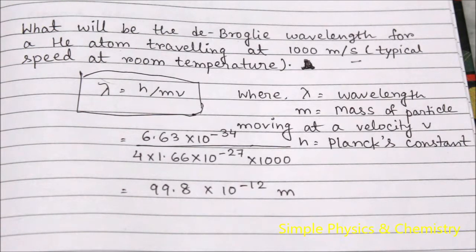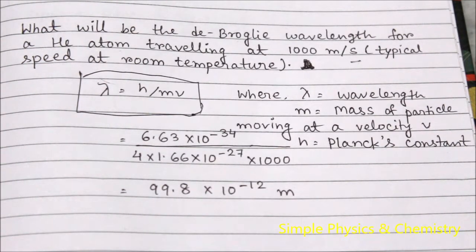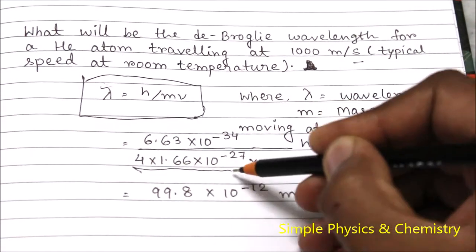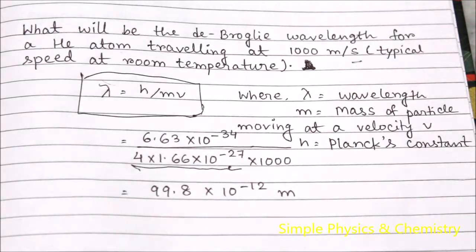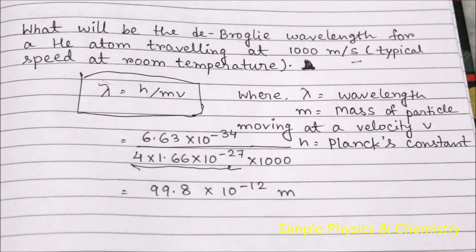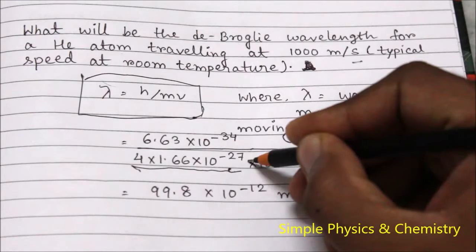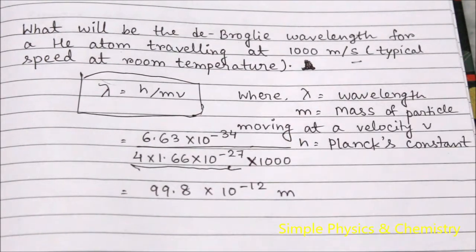We know that helium has 4 atomic mass units, so the mass of helium will be 4 times 1 amu, which is 4 times 1.66 multiplied by 10 to the power minus 27. The velocity is 1000 meters per second.